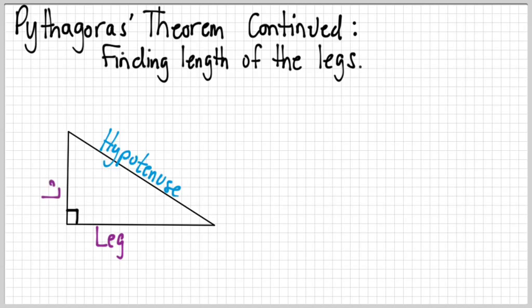So we have our standard right triangle with the hypotenuse and the legs. Last video we looked at finding the hypotenuse. Now we'll look at finding the legs when we don't know the length of the legs.